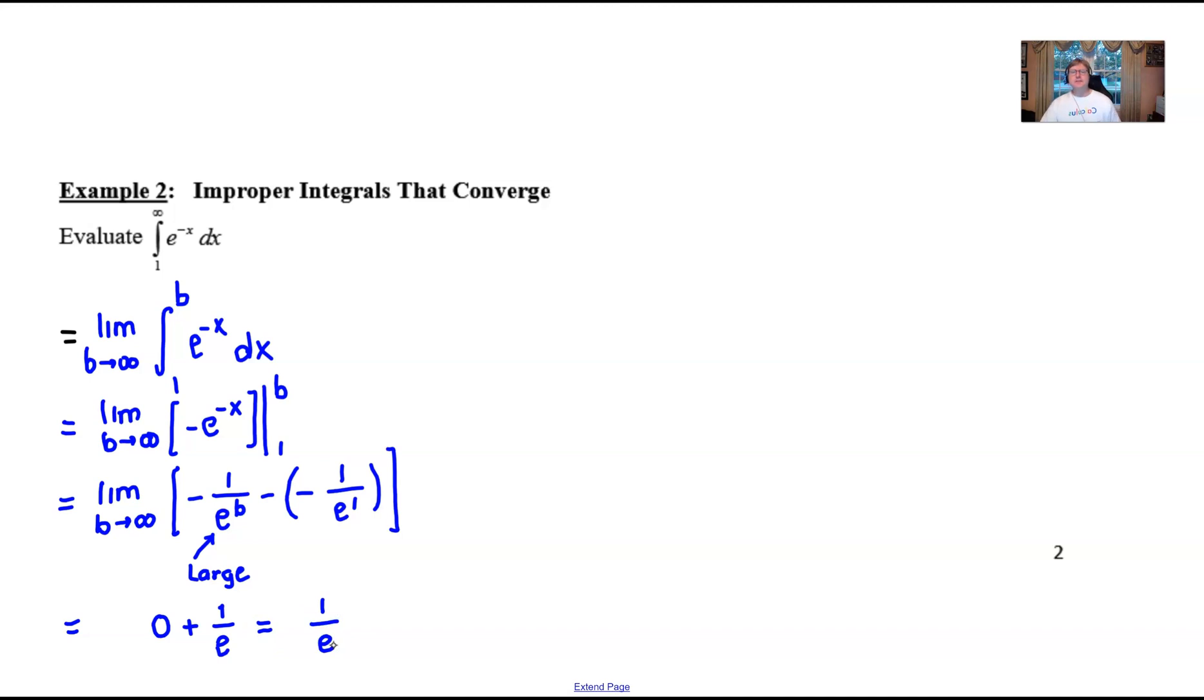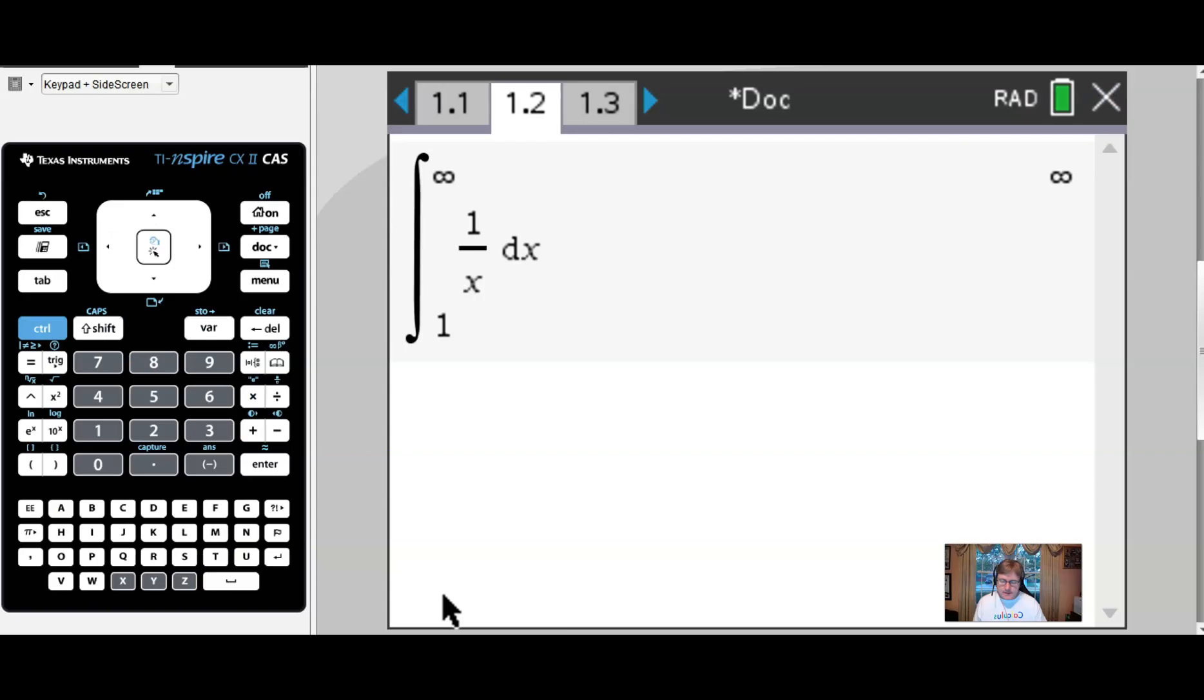Let's take a look at the graphing calculator and see what it has to say about this problem. So here we go. First of all, let's check out the definite integration functionality. So I will do my shortcut, Shift plus. We're going to integrate from 1 up to positive infinity, which I can use from that particular button. And then we have e raised to the negative x with respect to x. Letting the calculator do the work, I end up with e to the negative 1, which does indeed match the answer that we had, 1 over e.